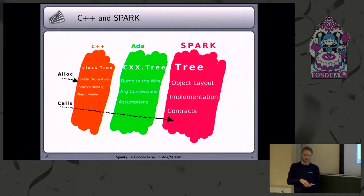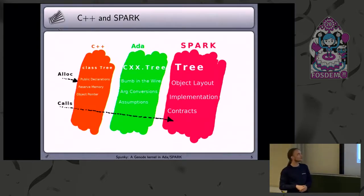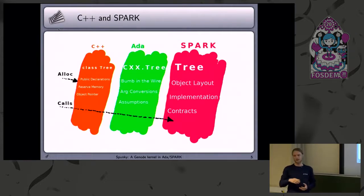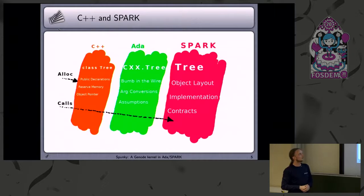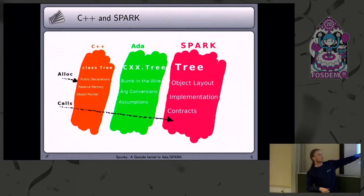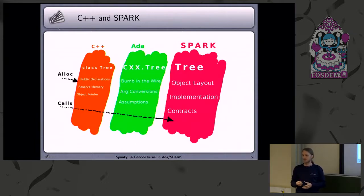Because the native Gnode environment is in C++, and we don't want to change this in the first step. So we came up with this design: for every Spark package that shall interact with C++ or be called from C++, there is a C++ class that has only the public interface declarations, so you can do the public calls on it. And it is sized to match the size of a record in Spark, which contains the object layout.